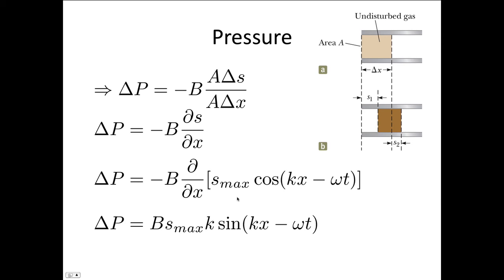And then substituting in, we said S was equal to S max cos(kx minus omega t). They're moving with simple harmonic motion about their equilibrium positions. Then taking the derivative of this, our negatives cancel out because we get negative sine(kx minus omega t), and this k has to be put out the front as well. So this gives us an expression for the pressure change in terms of the equilibrium displacement.